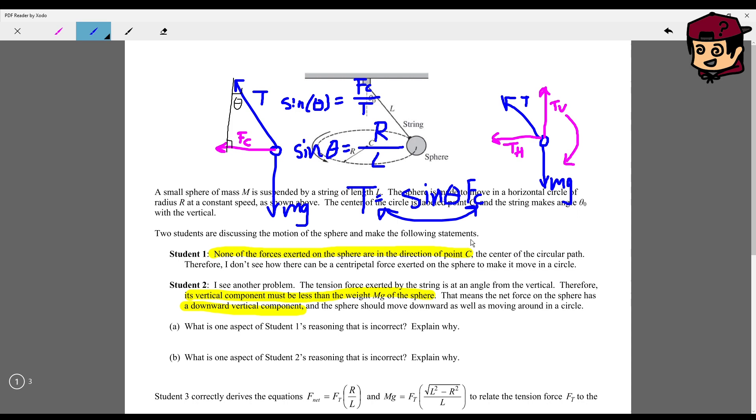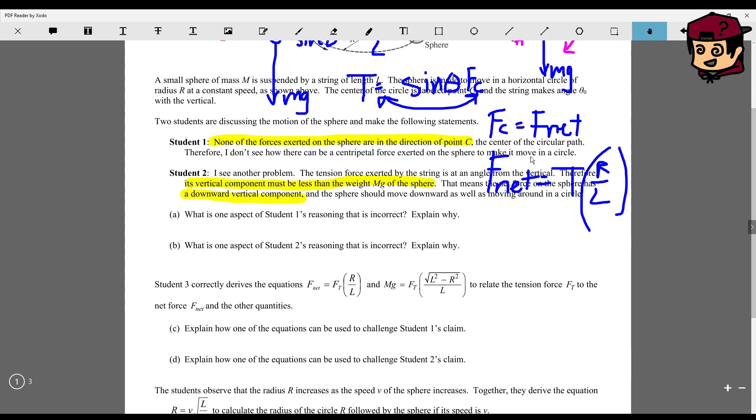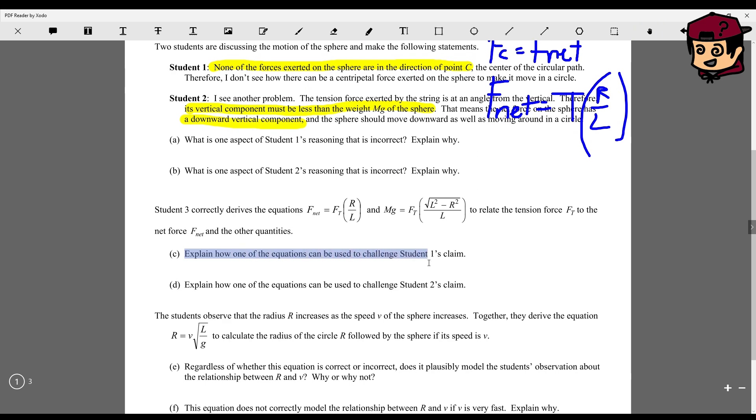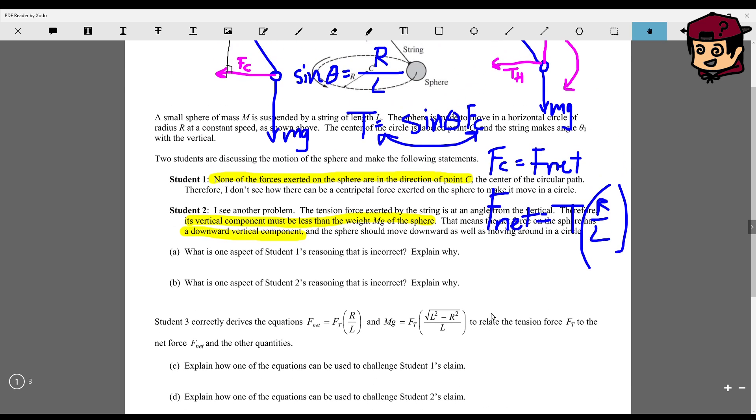fc is the only centripetal force. So fc equals f net. We only have fc acting horizontally on the horizontal component. fc is the horizontal component of th, but we'll just say right now, fc equals f net. So then that's this equation now. We have f net equals t sine theta, which is r over l. And that's how you would use this to explain student one's claim, and to counteract student one's claim.